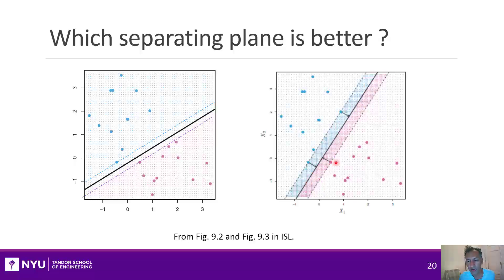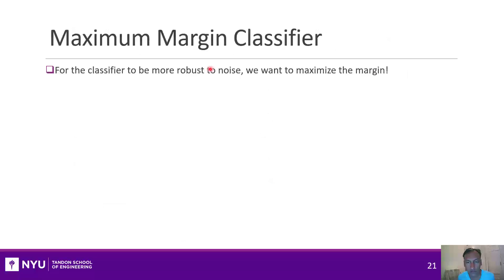So why might I pick a maximum margin classifier? It's just to make the data points as separated as possible. So that leads us to the idea of a maximum margin classifier, which is really just finding among all the separating classifiers, the one with the maximum margin.